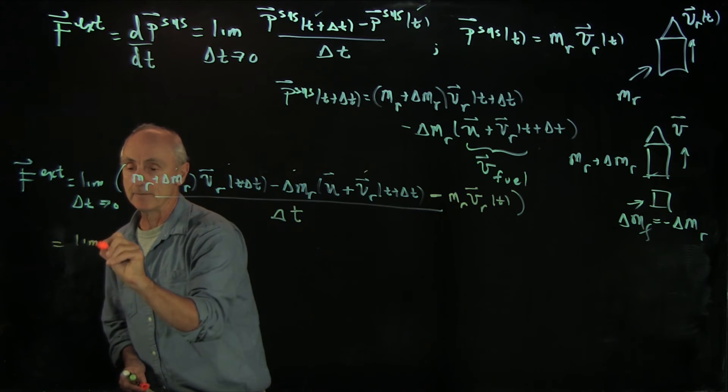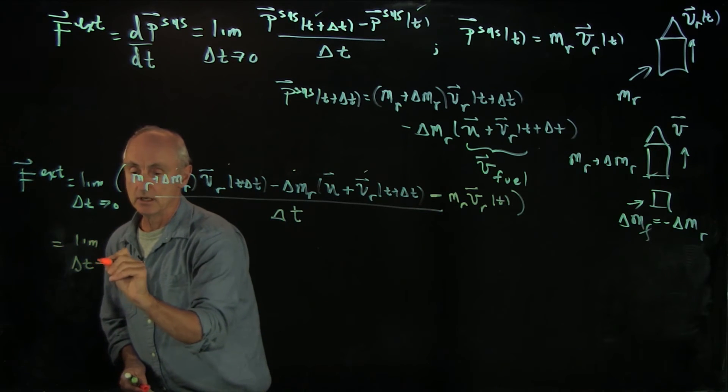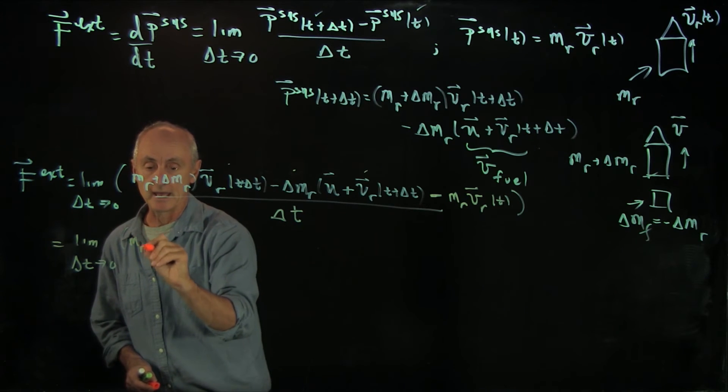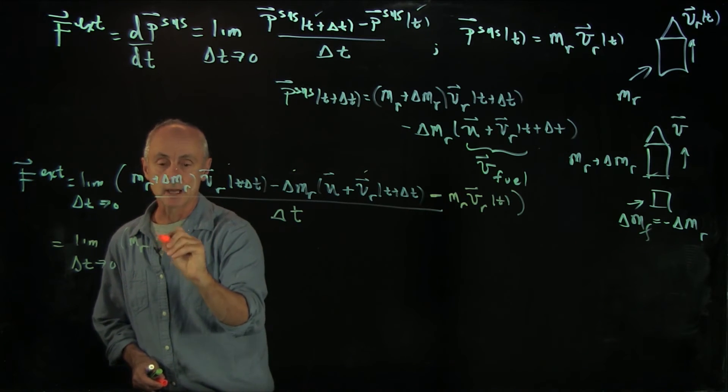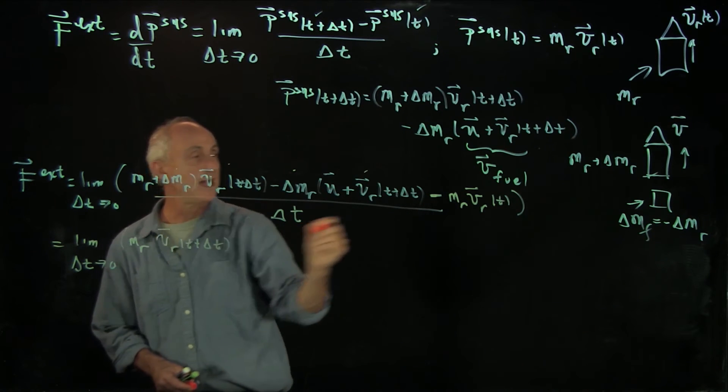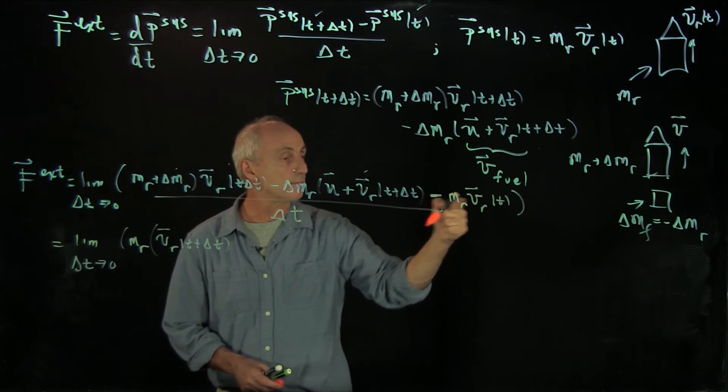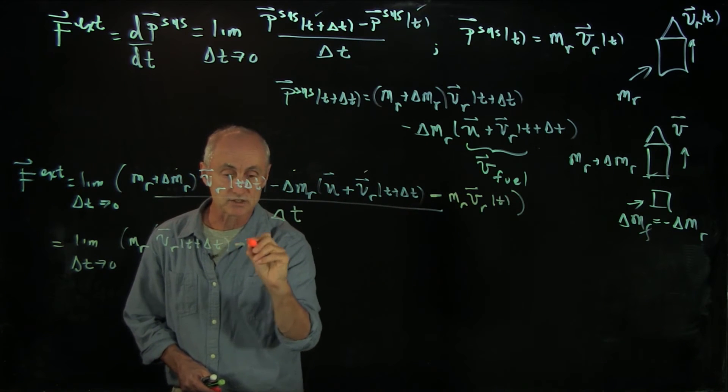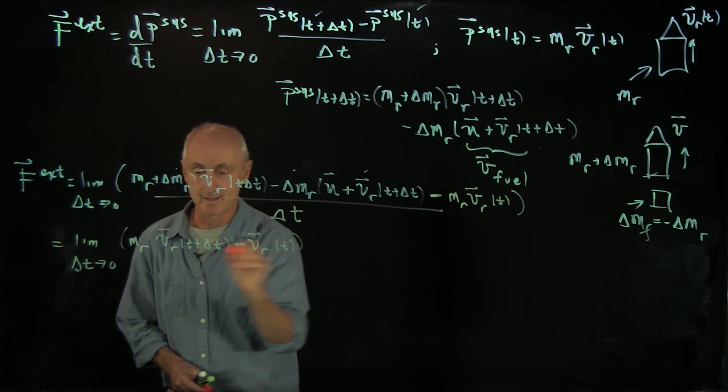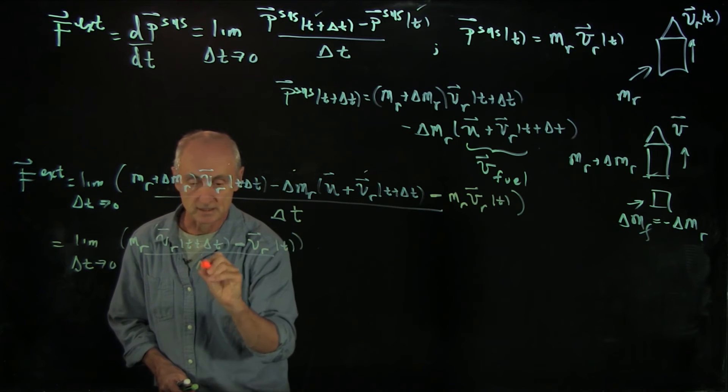So now we have the limit as delta t goes to 0. And I'm going to combine terms in the following way. Mr times v of r of t plus delta t. And over here, I have mr minus v of r. So I have a minus v of r of t divided by delta t.